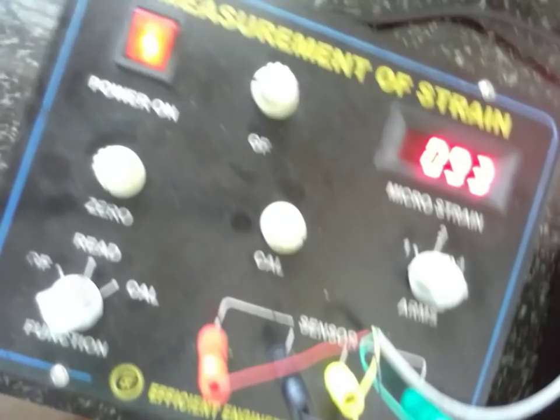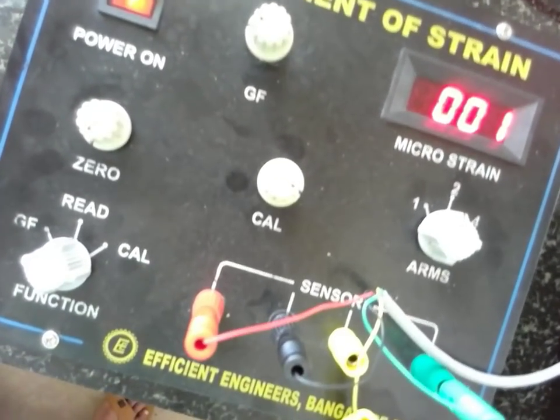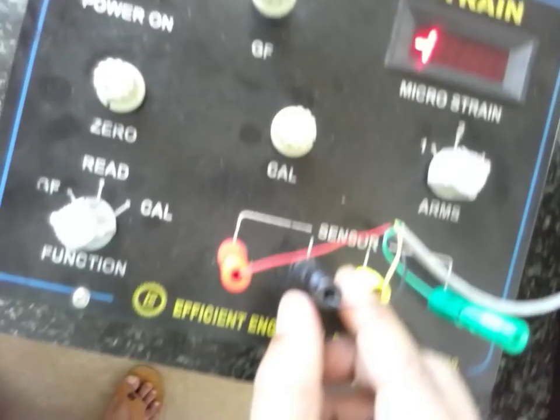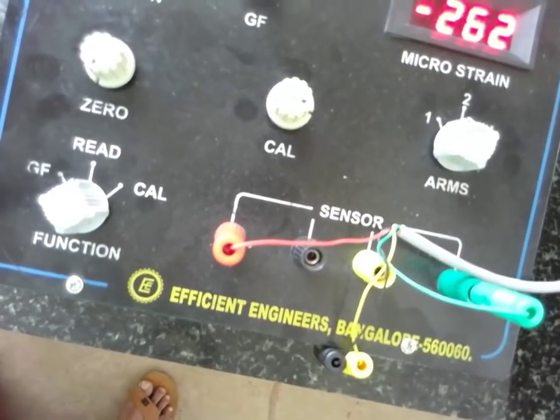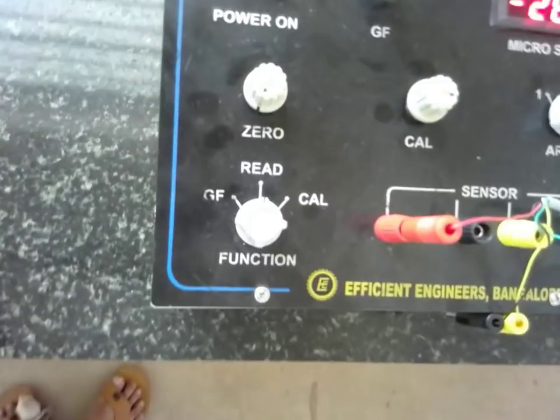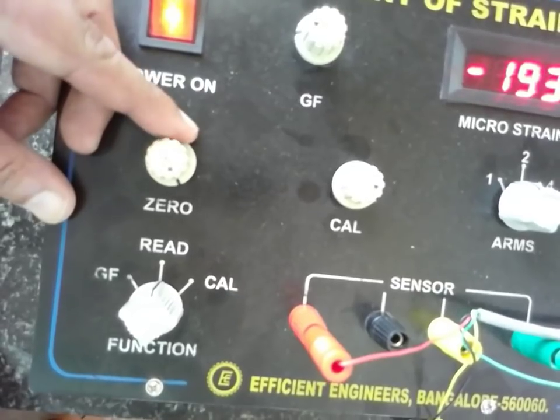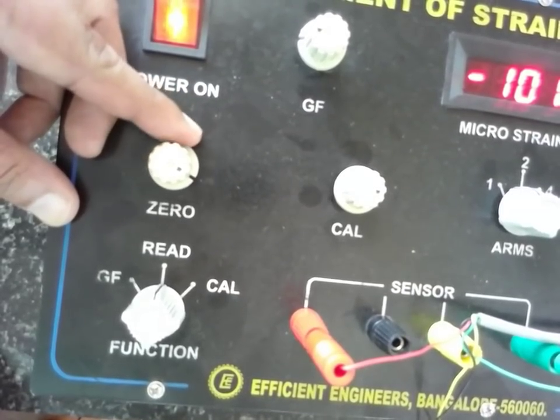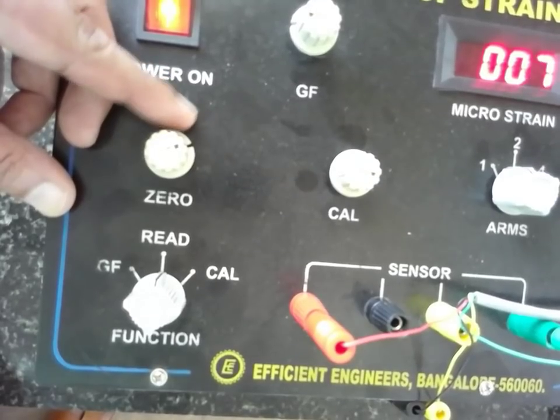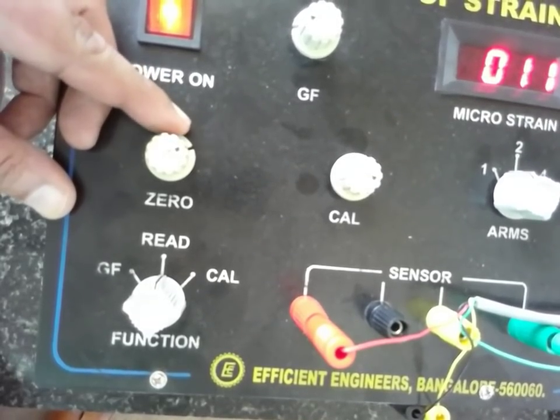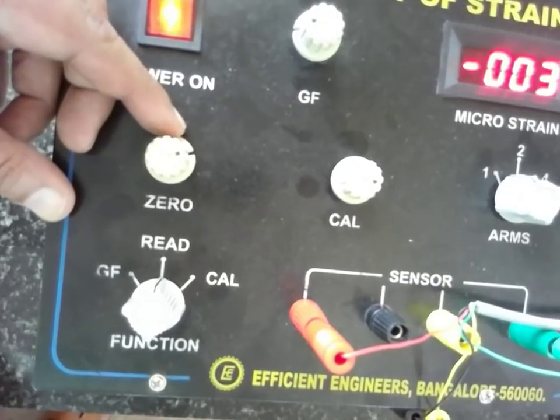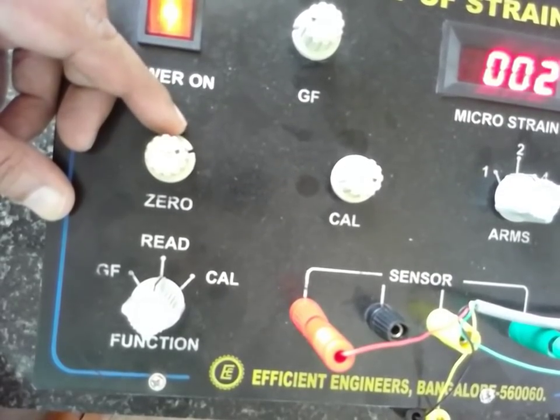If it is a quarter bridge, then what we have to do. In the case of quarter bridge, remove this weight from the pan. Set the arm to 1. You have to remove the black color from the digital indicator. Now read knob, make it read knob. Bring back to the read knob. It should be zero. With the help of zero knob make it zero. It should be zero.